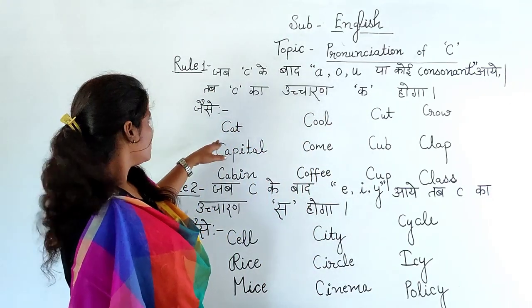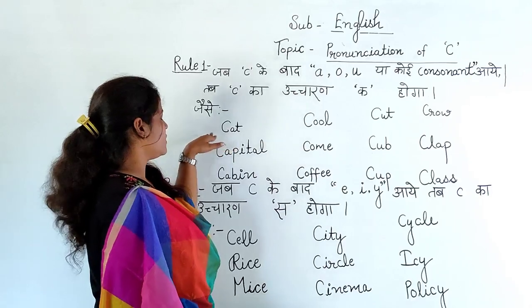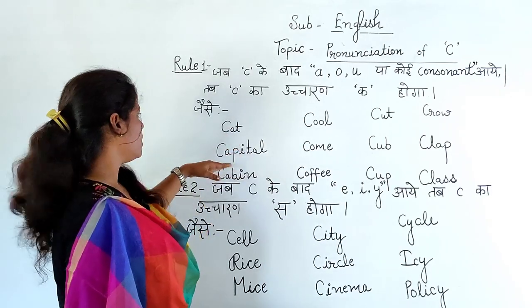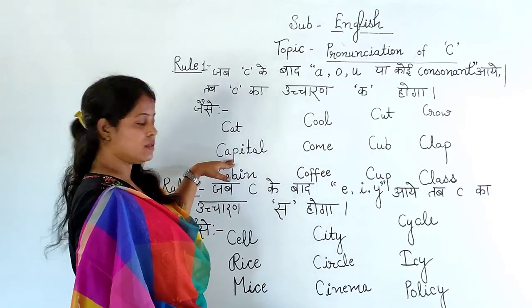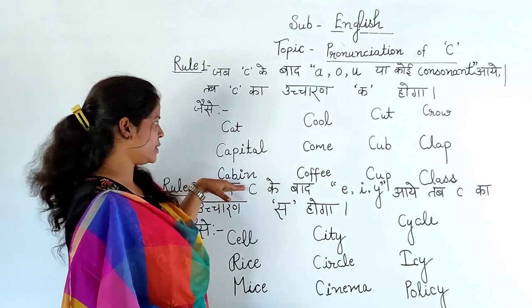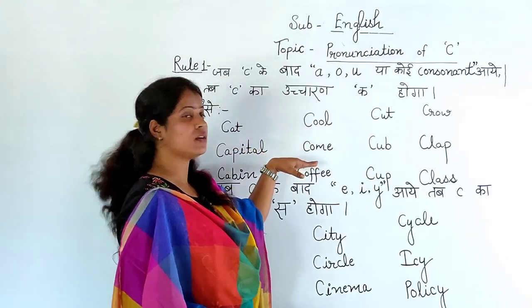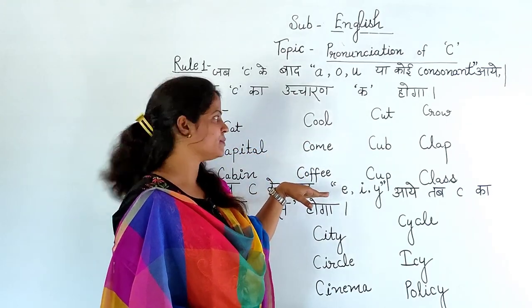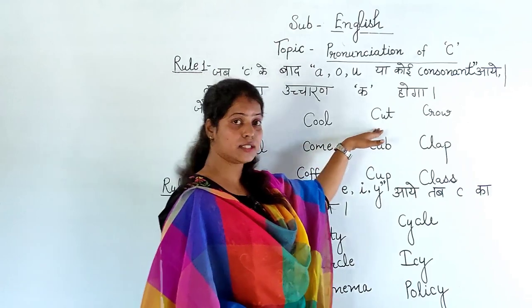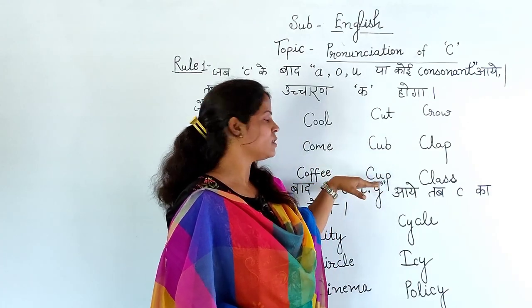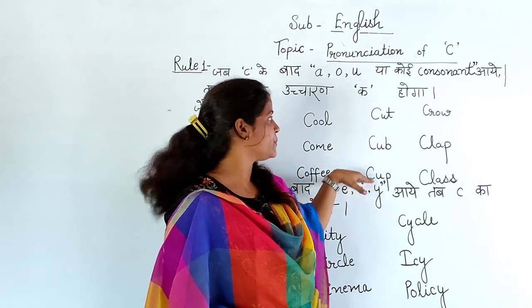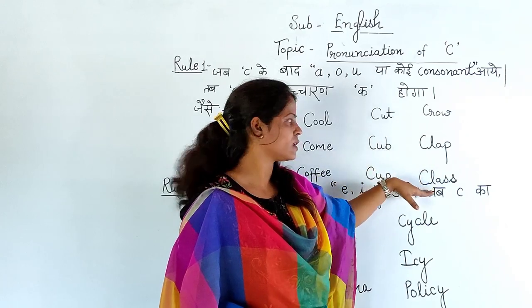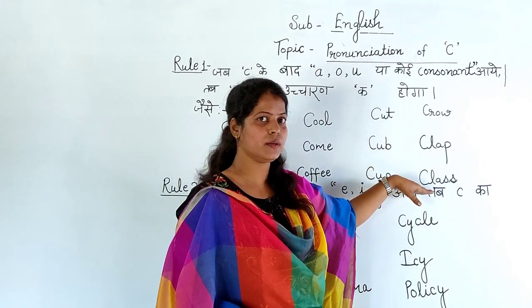First I have written C-A-T, CAT. Okay? Capital, Cabin, Cool, Come, Coffee, Cut, Cub, Cup, Crow, Clap, Class. Okay?